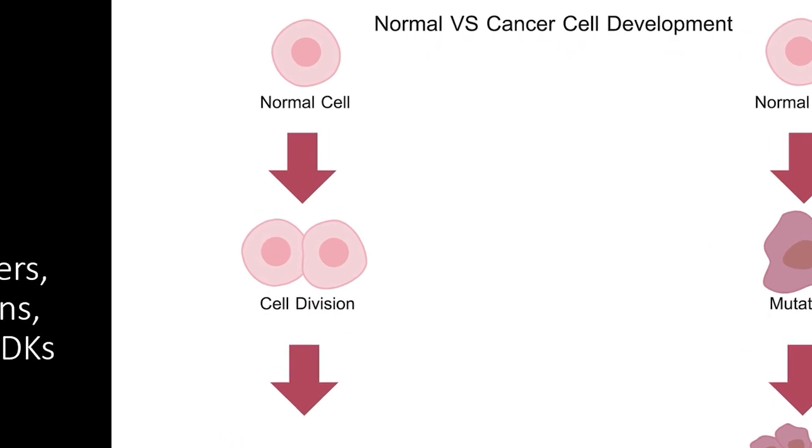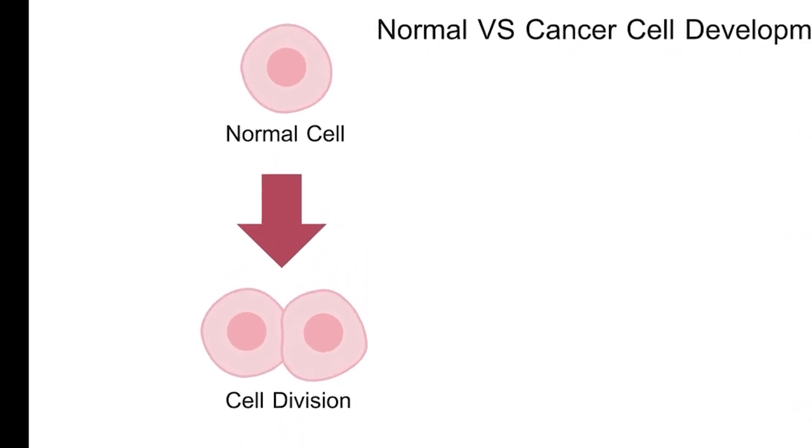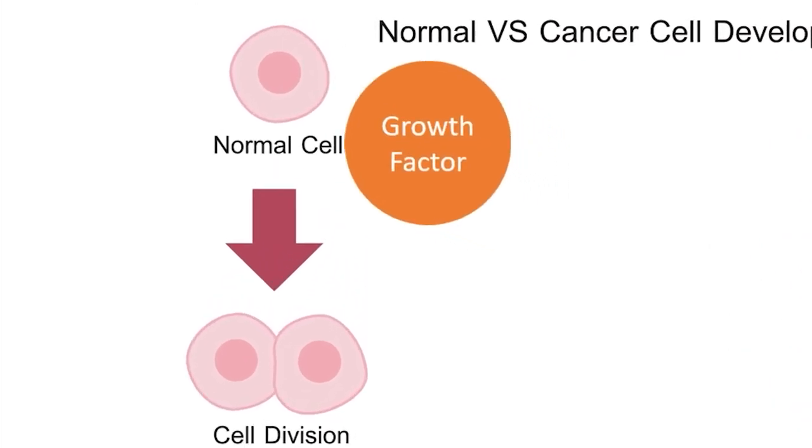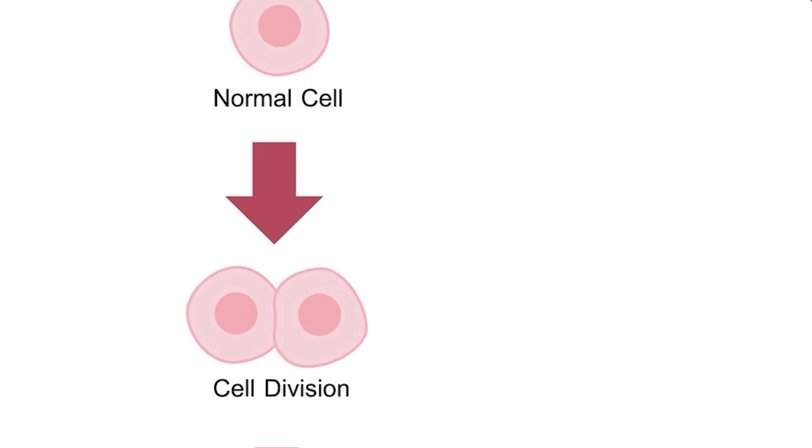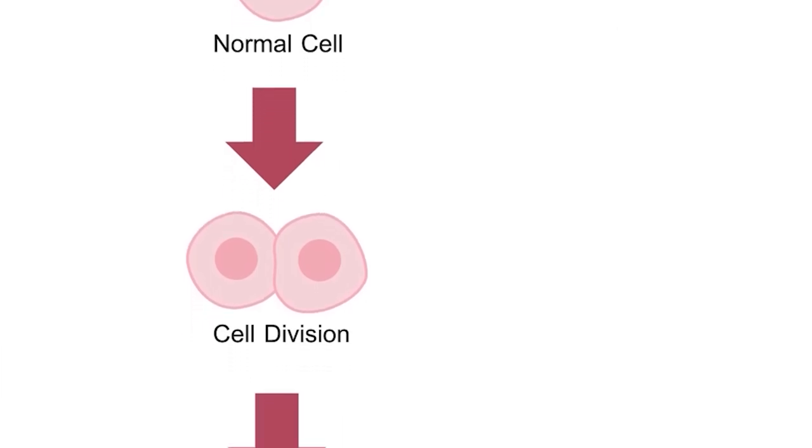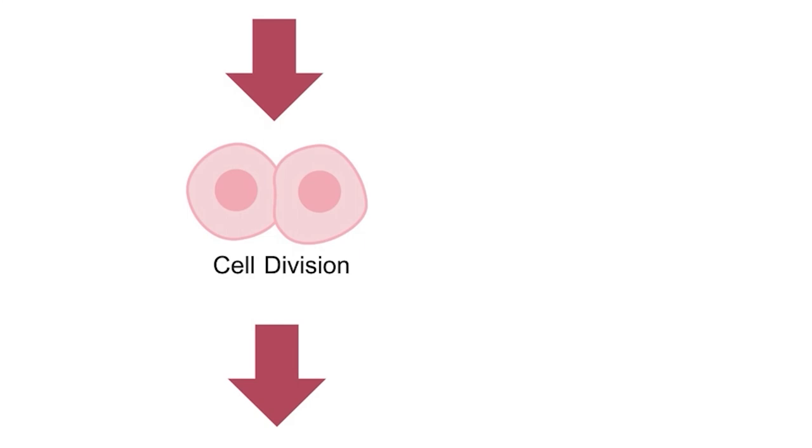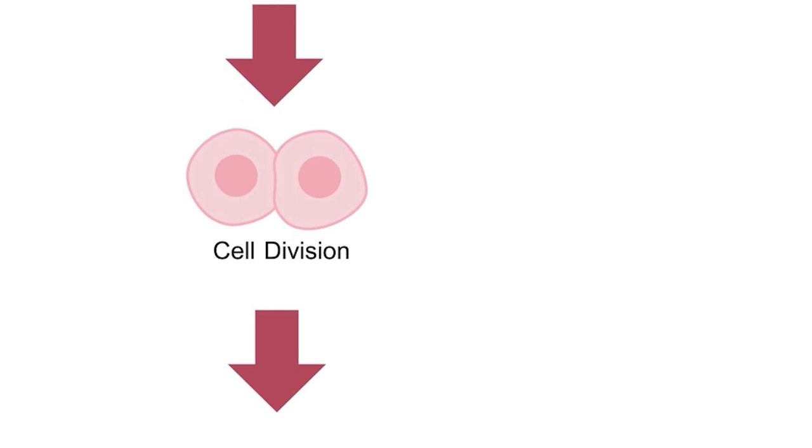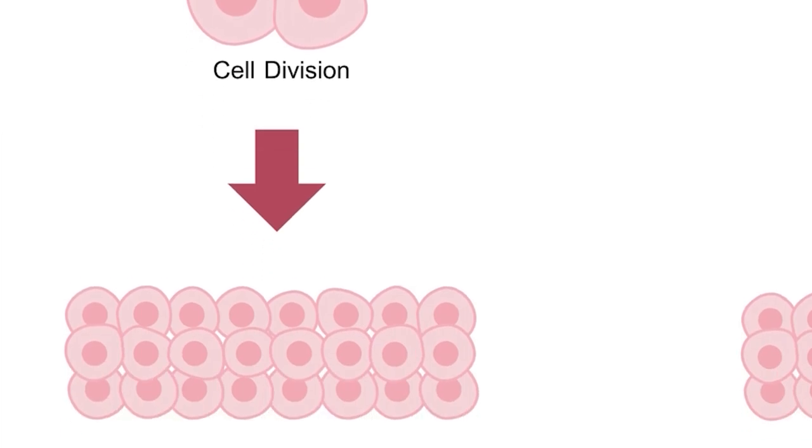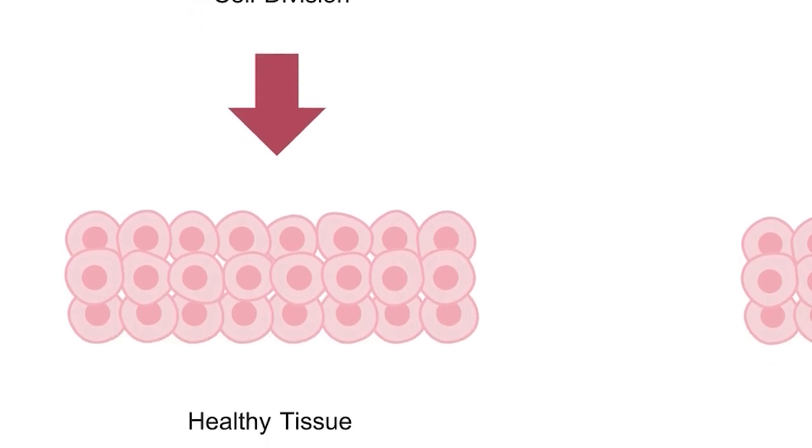Normal cells respond to a number of signals from the organism, such as growth factors, that activate signal transduction pathways. In turn, these signal transduction pathways release cyclins. The cyclins activate CDKs, which initiate cell growth, DNA replication, and cellular division. When cells are properly listening to hormones and growth factors as cues for when to divide, this leads to healthy tissues that are ordered and functional.